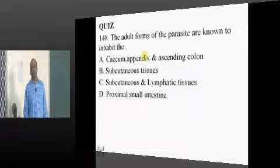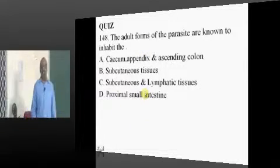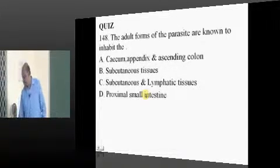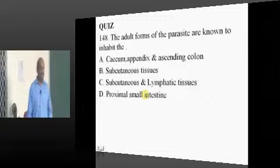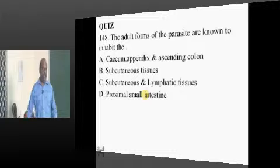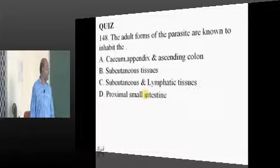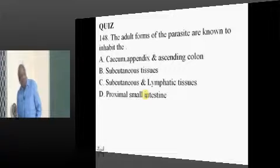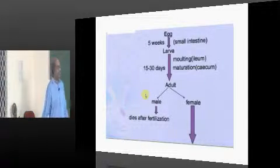Adult worms — where do they stay? The answer is the cecum. Eggs are perianal. Cecum is correct because adult worms were specifically questioned. Rohit proposes A, Hari says A — the answer is cecum.